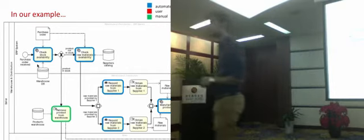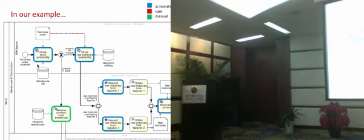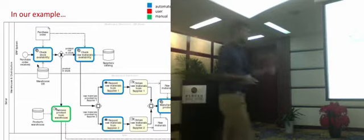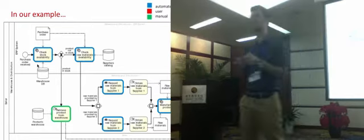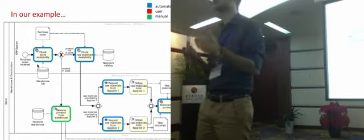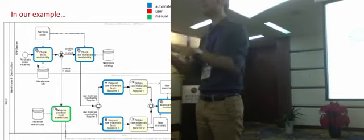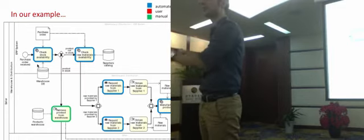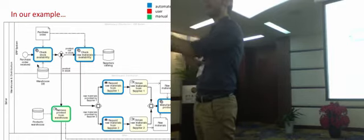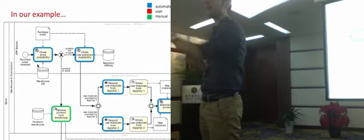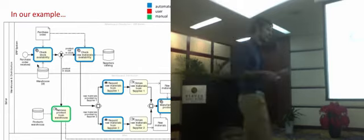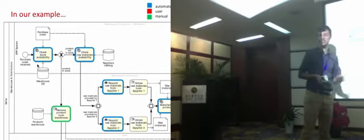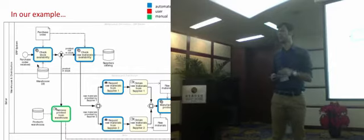Another option is to put a user task — in that case the user would be notified with a form that a particular product needs to be produced, then they would manually start the manufacturing process, and once completed, notify completion through the same form. But we are getting into the point of the second step in this method, which is the review of the manual tasks.